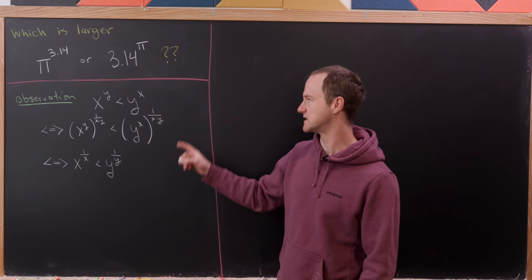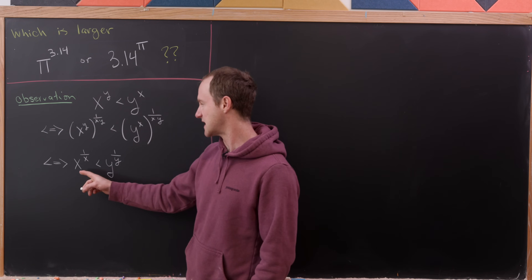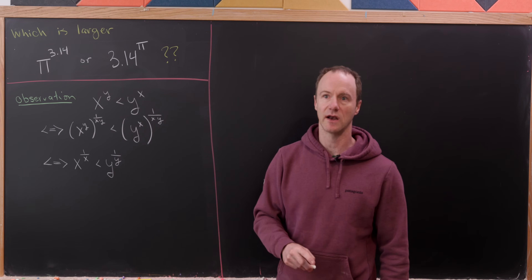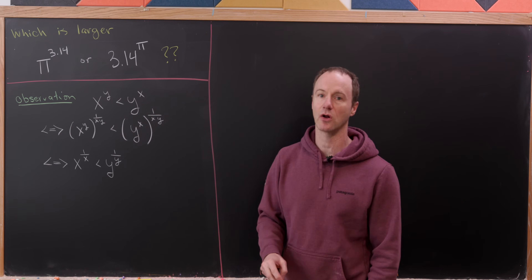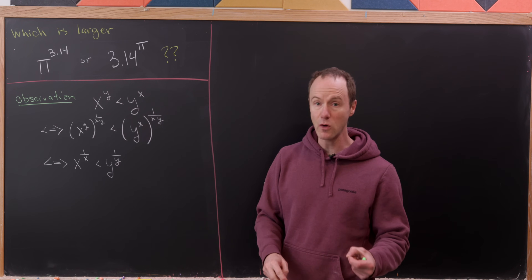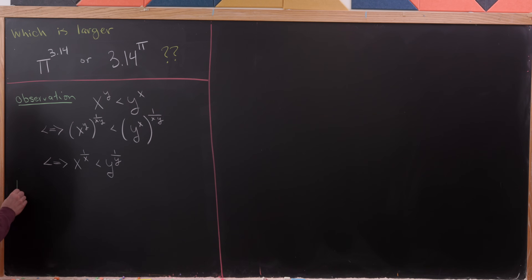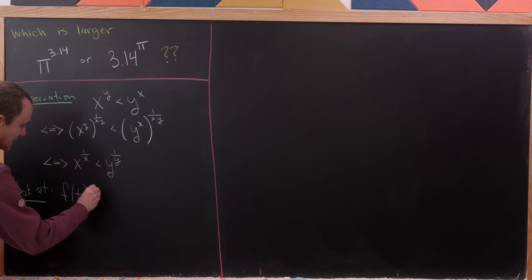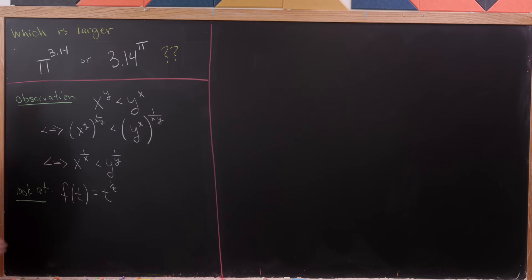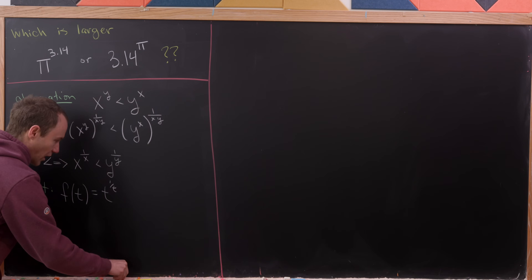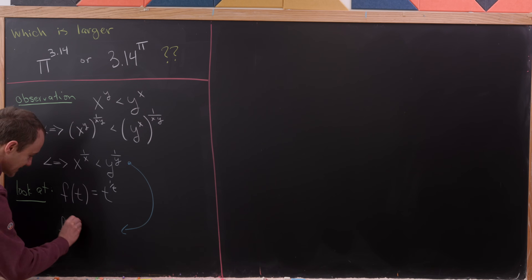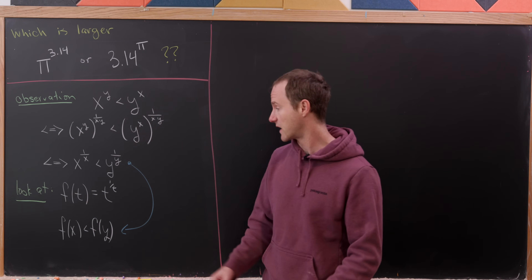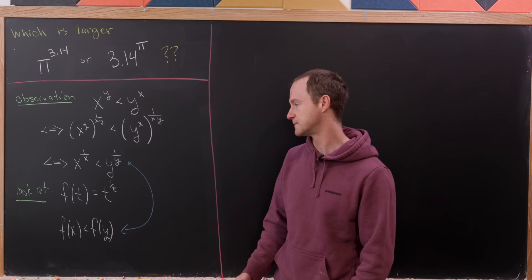What's great about x^(1/x) < y^(1/y) compared to our starting inequality is that each variable is now isolated on its own side. This motivates us to define the function f(t) = t to the power 1 over t. Our inequality is then equivalent to saying f(x) < f(y), and now we can use the machinery of calculus.